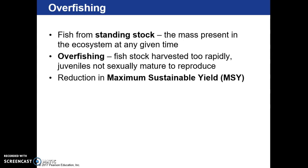How much we harvest and making sure fish are of a certain age are the two most important factors in finding that balance. Overall, we are seeing a reduction in what's called the maximum sustainable yield, and we'll be addressing some of the reasons why throughout the lecture today.